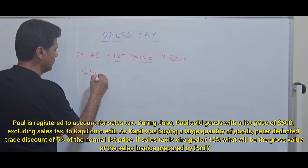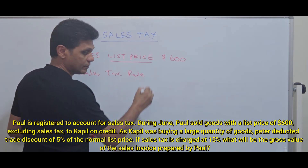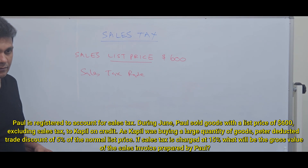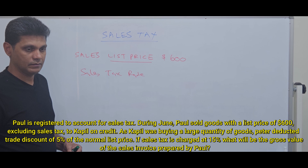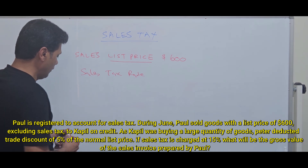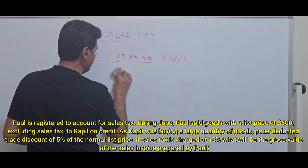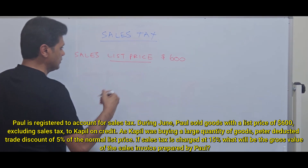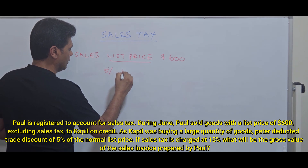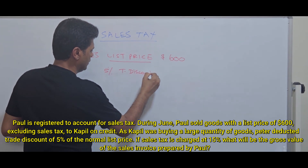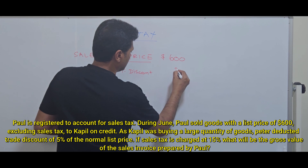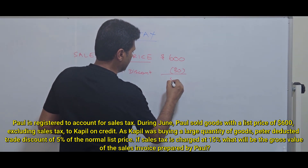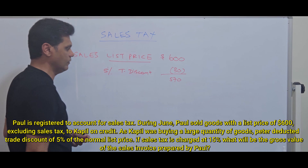The sales tax rate is 5% of the normal list price. Now they have given a trade discount of 5% of the list price. So 5% of $600 — how much is that? That is the discount. So what is the list price after the discount? $570.